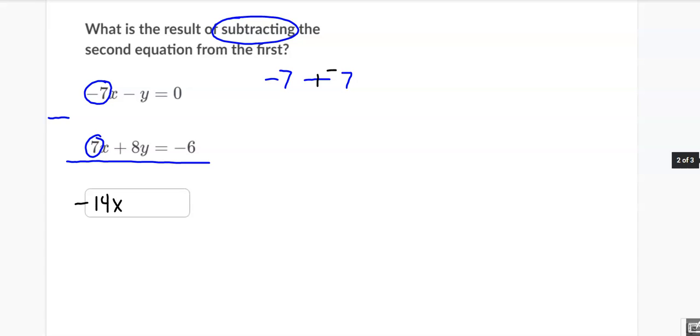Now when I go to the next one, I have a negative 1, subtract a positive 8. So a negative 1, subtract a positive 8. And again, don't subtract. Add the opposite. So that's going to give me negative 9y's.